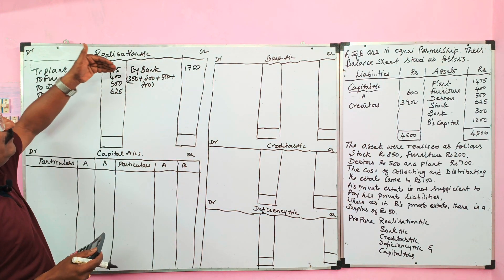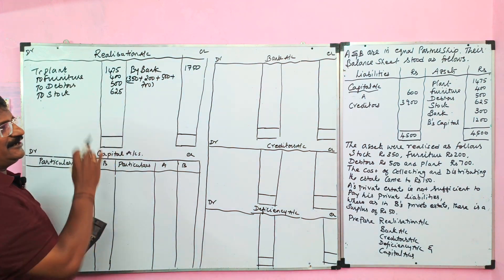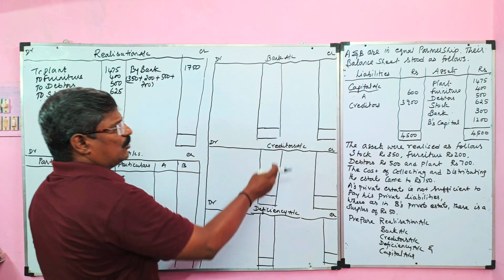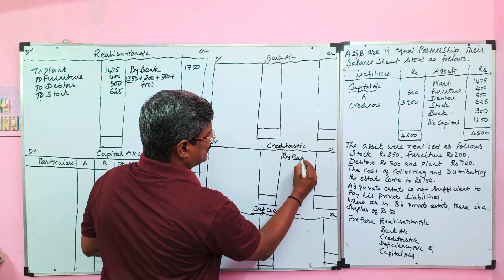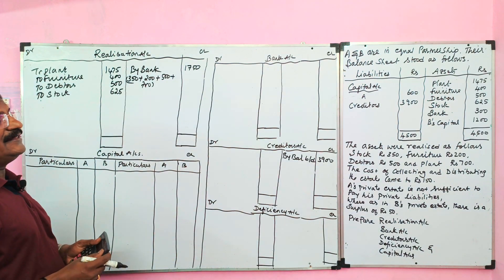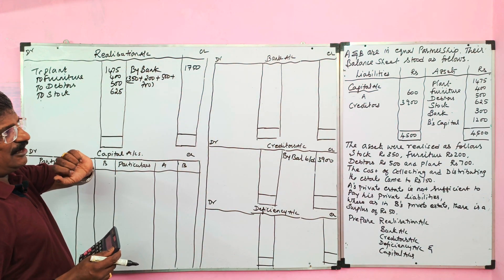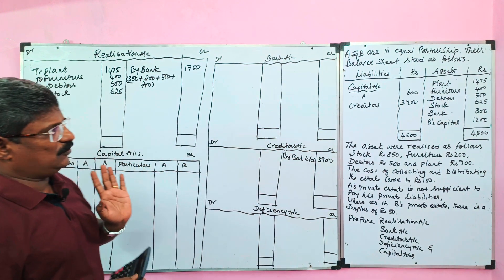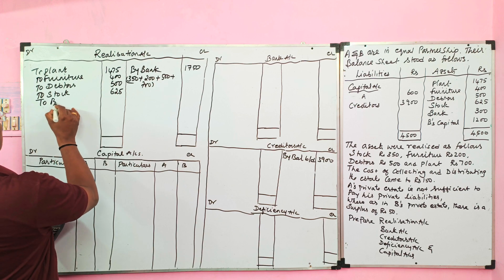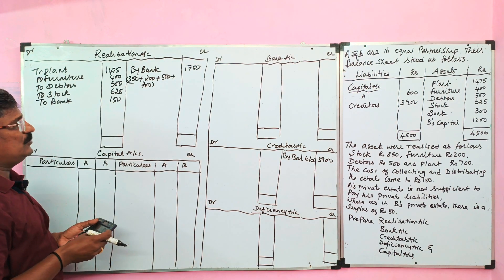We should not transfer the creditor to the realization account because the firm is unable to repay the creditor. So the creditor account is recorded on the credit side as 'by balance b/d'. The creditor account will be partly settled after preparation of the bank account. We transferred all assets to realization, then realized all assets, then passed the realization expenses entry. Now we close the realization account, which will show a loss.